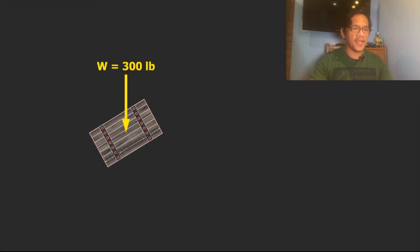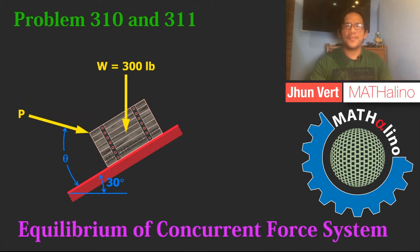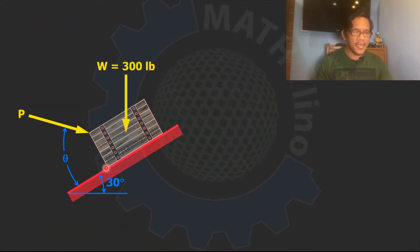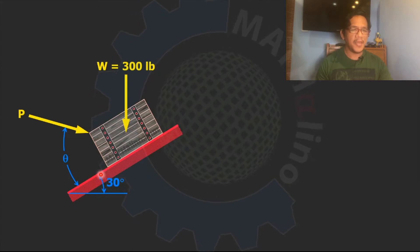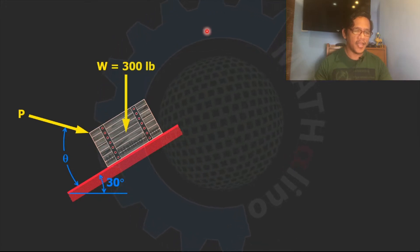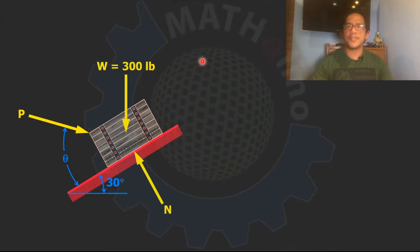A 300-pound box is held on an incline by force P, which is at angle theta from the incline. Hello everyone, I'm Junvert of Matalino. In this video, we are going to discuss problems 310 and 311 of engineering mechanics. In this problem, the incline is smooth, meaning there is no friction between the box and the incline. Therefore, the reaction here is perpendicular to the incline.